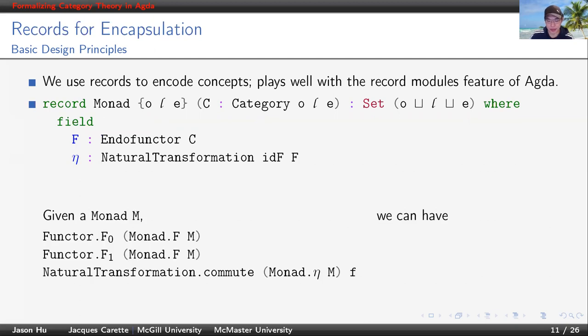Given a monad M, normally to access deeper fields, we have this kind of nested calls of accessors. The first expression is trying to access the object mapping of F of M. The second expression is trying to get the morphism mapping of F of M. And the third one is trying to get the naturality square of eta of M and applying that to F. As you can see, these expressions are very long and verbose, not quite readable and take a while to understand.